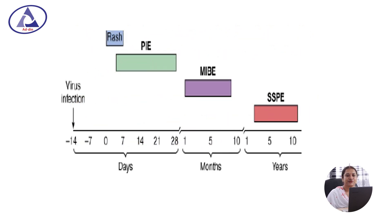These figures show the timeline of the encephalitis types: measles inclusion body encephalitis occurs within days to 1–10 months, whereas SSPE occurs between 1–10 years after the initial measles infection.